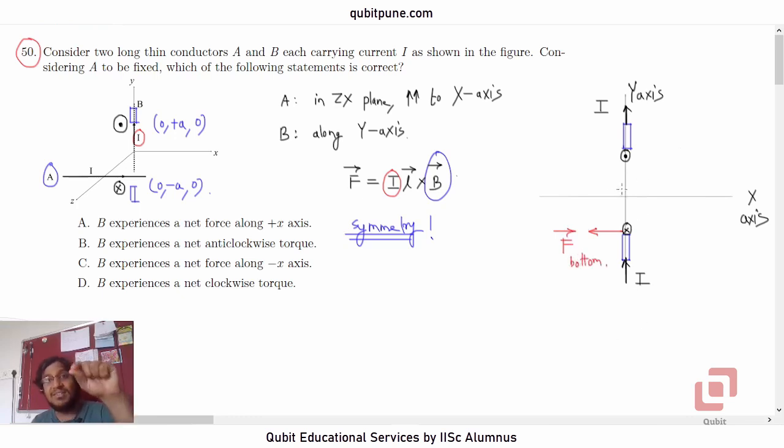Now what has changed for the one that is above the z-x plane, for this conductor? Only the direction of the magnetic field has changed. The magnetic field was previously pointing away from us and now it is pointing towards us. Which means the force here has to be equal in magnitude but opposite in direction.